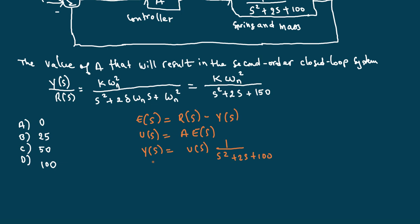What we need to do is just plug in. We have Y(S) equals U(S), but what's U(S)? U(S) is A*E(S). What's E(S)? We have R(S) - Y(S), so we have A*E(S), which is R(S) minus Y(S), over S² + 2S + 100.